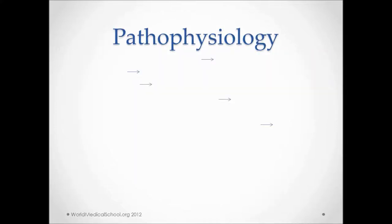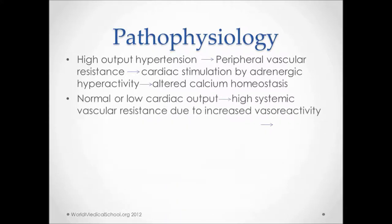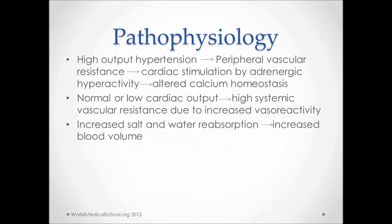There are a lot of proposed mechanisms for hypertension. One of them being higher output hypertension, which leads to peripheral vascular resistance, which in turn causes cardiac stimulation by adrenergic hyperactivity, and that leads to altered calcium hemostasis. Another theory is that of normal or low cardiac output leading to high systemic vascular resistance due to increased vasoreactivity. A more common thought is that hypertension is due to increased salt and water reabsorption, which leads to increased blood volume.